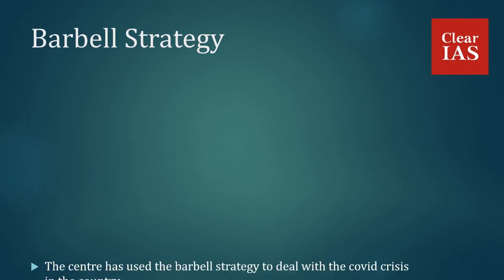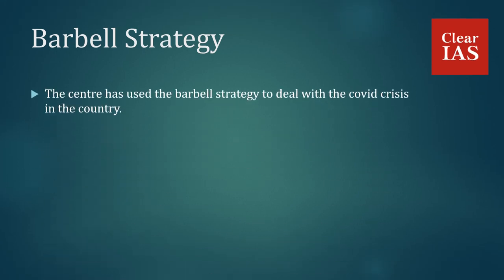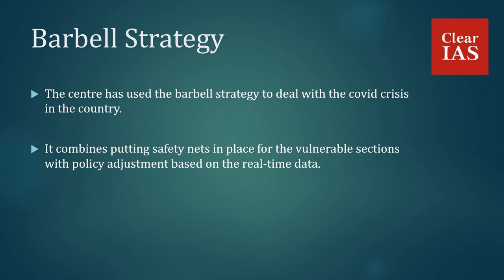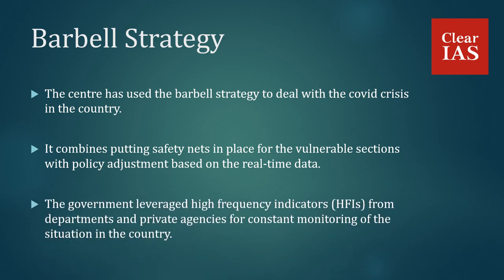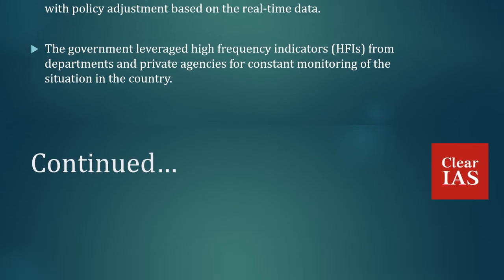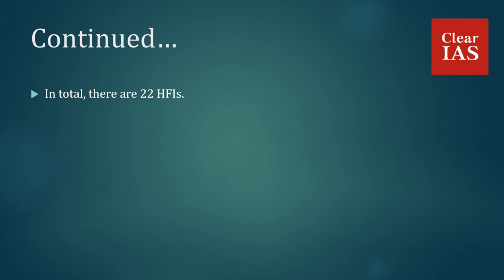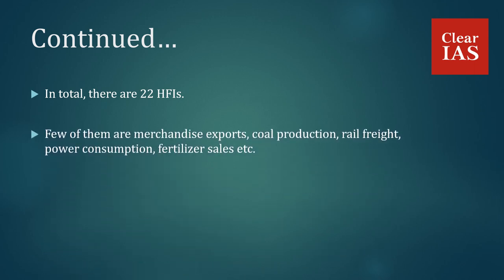The government used the Barbell Strategy to deal with the COVID crisis. It combines putting safety nets in place for the vulnerable sections with policy adjustment based on real-time data. The government leveraged High Frequency Indicators, HFIs, from departments and private agencies for constant monitoring of the situation in the country. In total, there are 22 HFIs. Few of them are merchandise exports, coal production, rail freight, power consumption, fertilizer sales, etc.